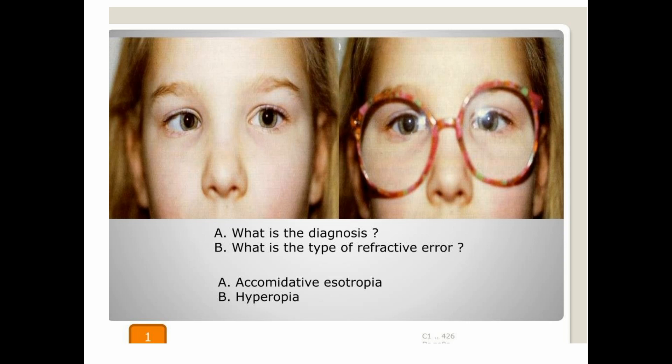What are the treatment options? For fully accommodative esotropia the treatment is glasses — the eyes will be straight in glasses. While in partially accommodative esotropia the patient will need glasses as well as surgery. First we do surgery so the eyes will be straight partially, and the remainder is corrected with glasses. Always counsel the patients.